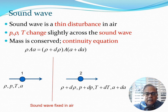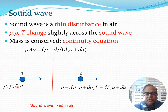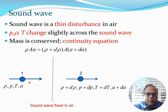Now let's talk about the sound wave, which will help us derive equations to calculate the speed of sound. The sound wave is a thin disturbance in air, shown here by a red line. We assume the sound wave is fixed and air velocity comes in toward it. At point 1, the flow properties are ρ, p, T, and a. After the sound wave at point 2, these are incremented by small amounts: ρ+dρ, p+dp, T+dT, and a+da.